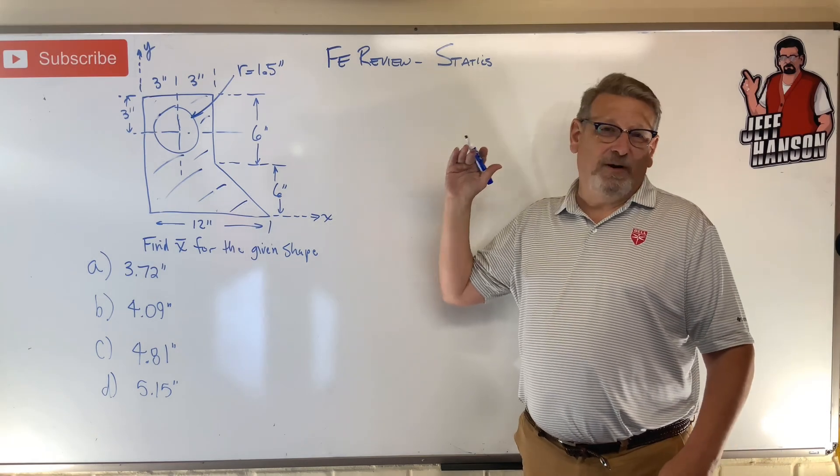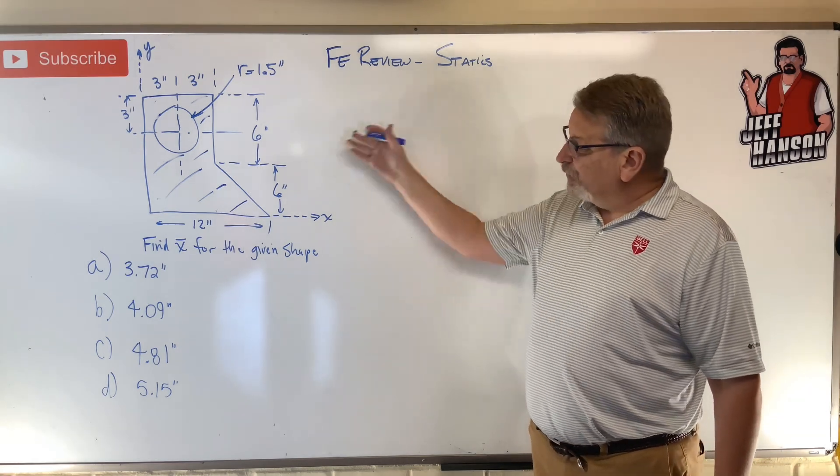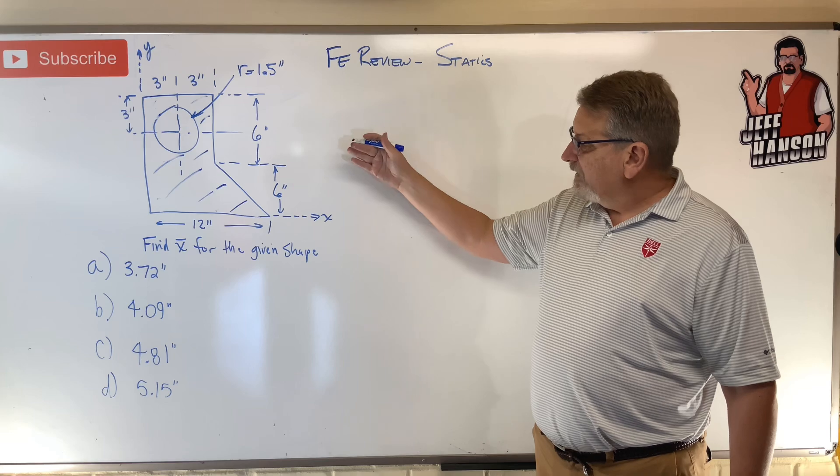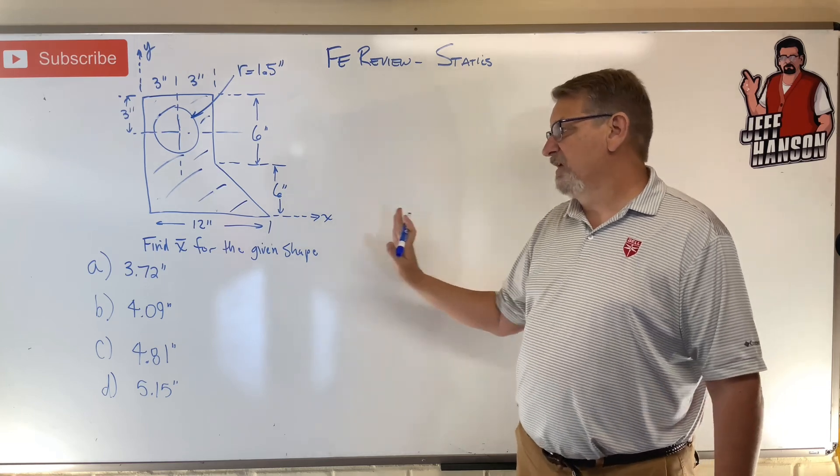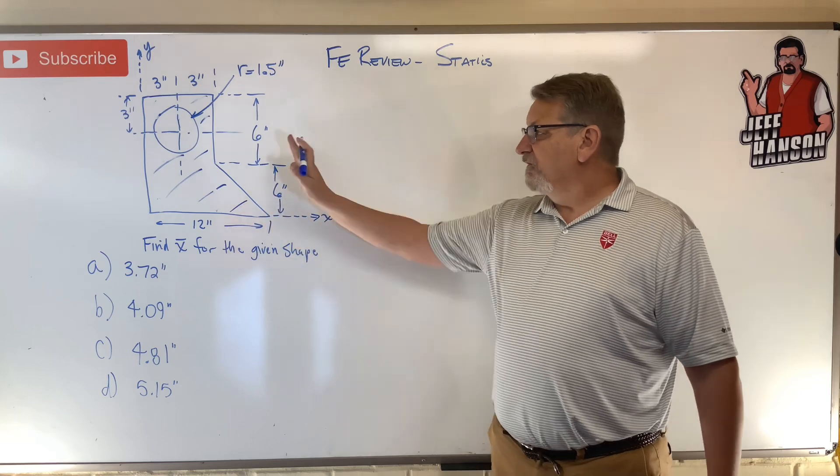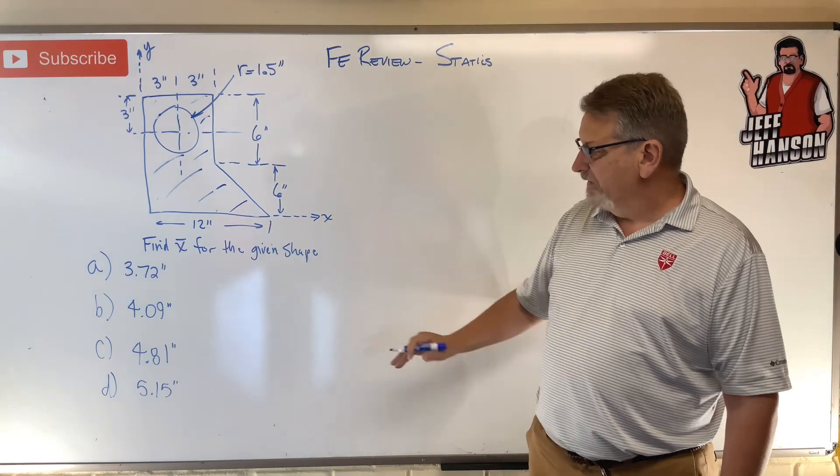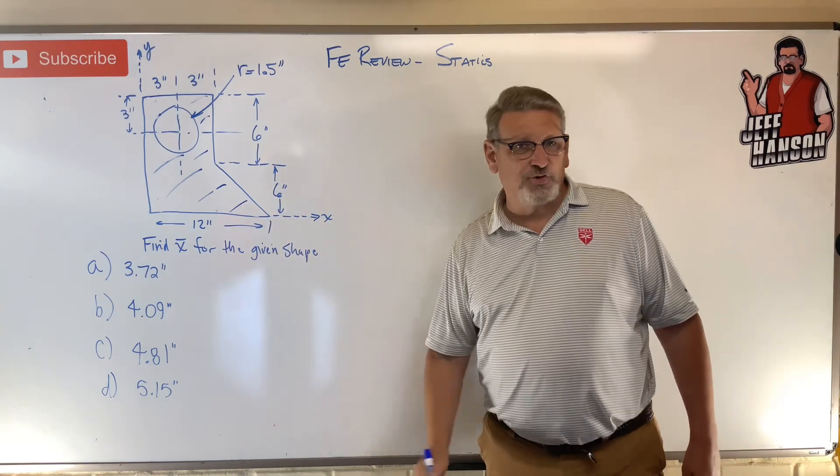Welcome back, FE review problem on statics. We got a little old centroids problem here. So for the given, find the X bar for the given shape. So where is X bar for that shape? Looks like a shoe with a hole in it. There are your answer choices.